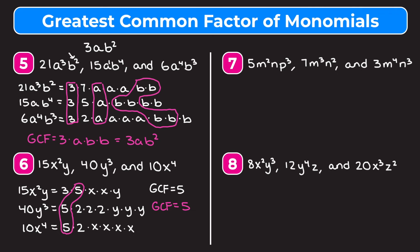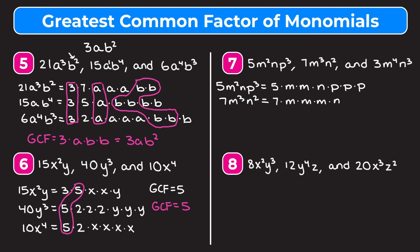For the last two examples, pause and try them on your own, then watch me work through them. Example 7: 5m squared np cubed, 7m cubed n squared, and 3m to the fourth n to the third. Writing out factors: 5 is prime, m squared is two m's, n is just n, p cubed is three p's. 7 is prime, m cubed is three m's, n squared is two n's. 3 is prime, m to the fourth is four m's, n to the third is three n's.